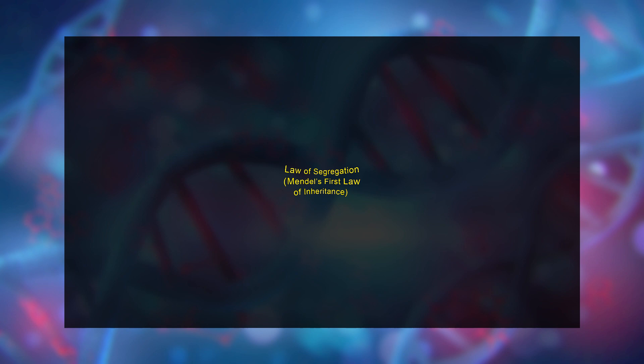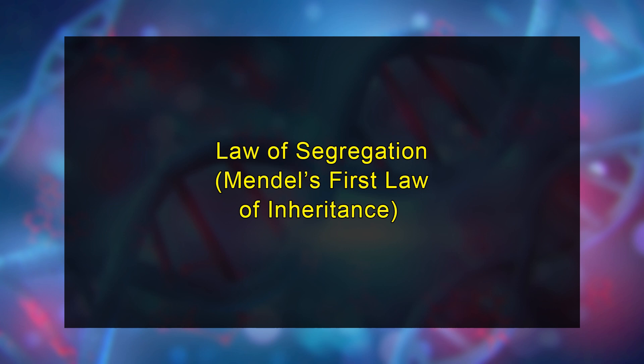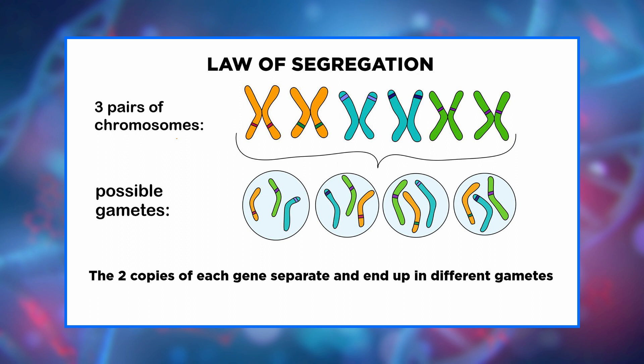Let's now discuss the law of segregation, or the first law of Mendel's inheritance. The law of segregation states that when any individual produces gametes, the copies of a gene separate so that each gamete receives only one copy — a gamete will receive one allele or the other. The direct proof of this was later found when the process of meiosis came to be known. In meiosis, the paternal and maternal chromosomes get separated and the alleles with the characters are segregated into two different gametes.